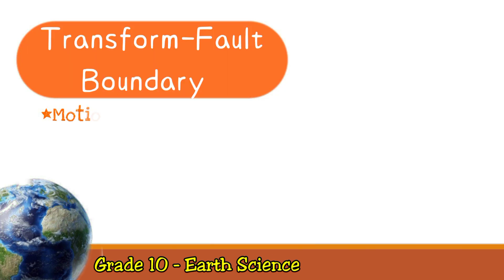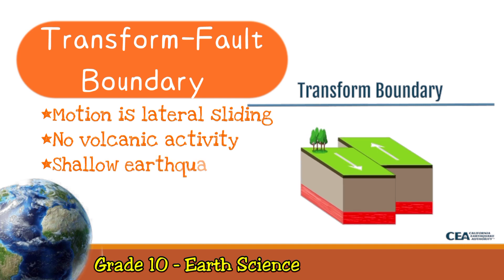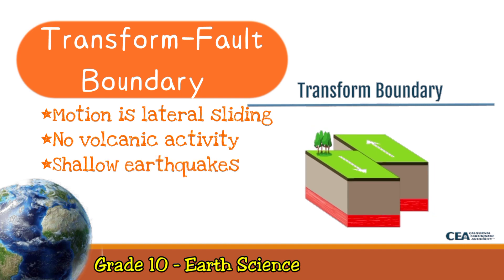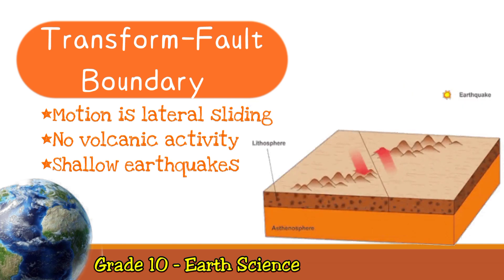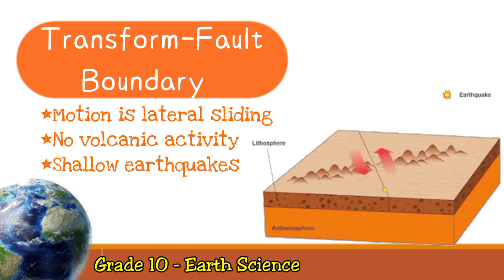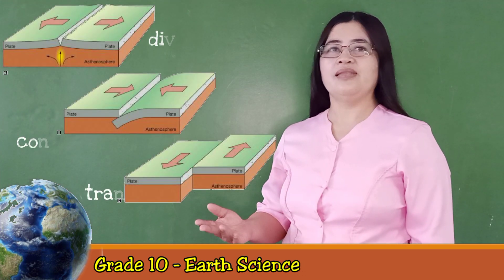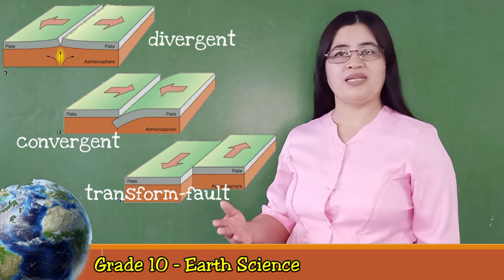Now let us consider the transform fault boundary. The motion in this type of boundary is lateral sliding. The motion of the plates in this boundary has no major effect and does not produce volcanic activity. These transform fault boundaries can also be found on the ocean floor. They commonly offset actively spreading ridges, producing zigzag plate margins, and are generally associated with shallow earthquakes. We now see that geological activities take place in these different plate boundaries.